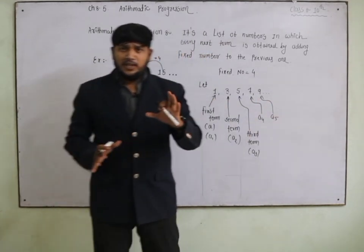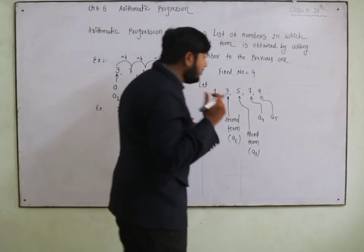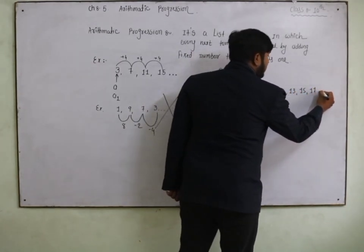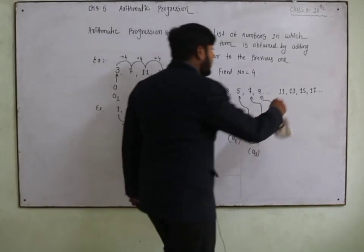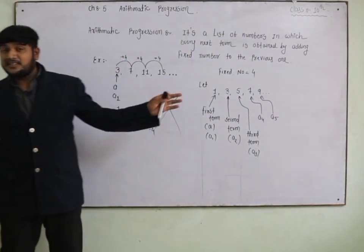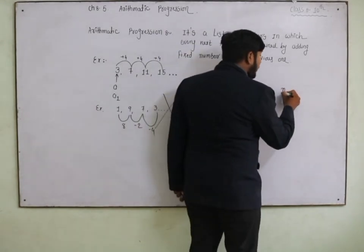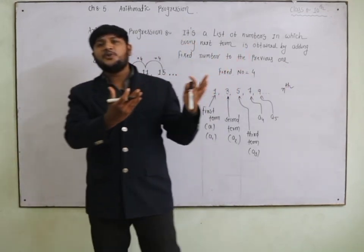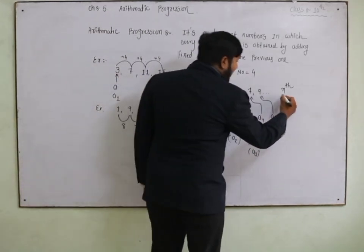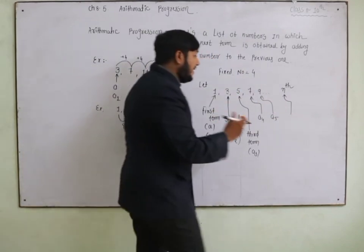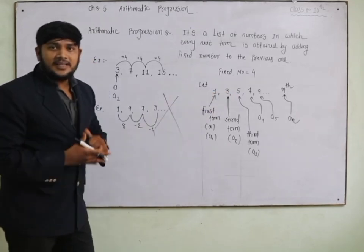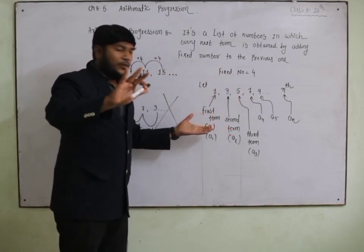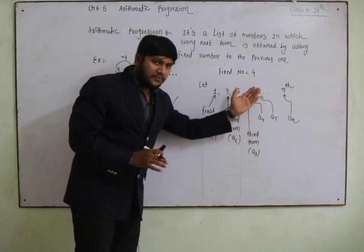Here we don't know the last term — it could be 11, 13, 15, or 17. When we don't know the last term, we call it the 'nth term' and represent it by 'an'. So the last term is represented by 'an'.